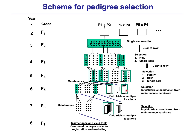In the F5 generation these yield trials are harvested and we make a visual selection in the field, but mostly a selection based on the results from different locations. When we select an F5 line, we don't use the seed from the trial — we use the seed from the maintenance breeding, where we don't make much selection; we just harvest and use the bulk for yield trials in the F6 generation, which is even bigger and at more locations.